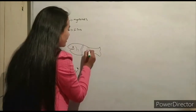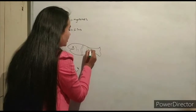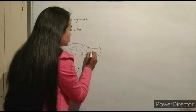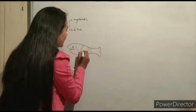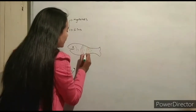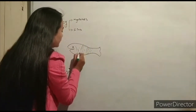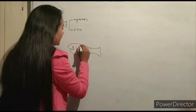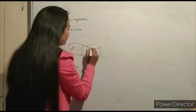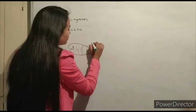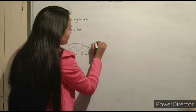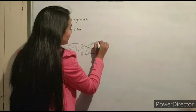The vertebral column is flexible, and the V-shaped muscles called myotomes allow the fish to move forward.